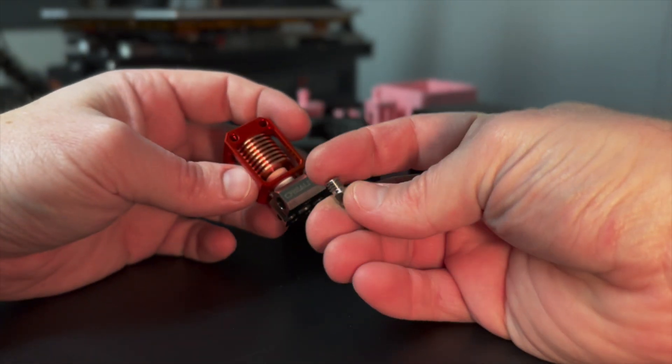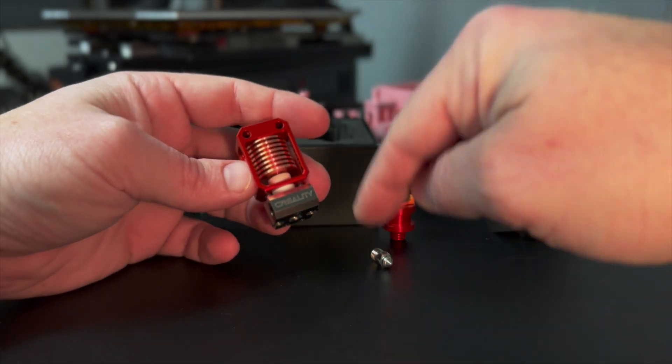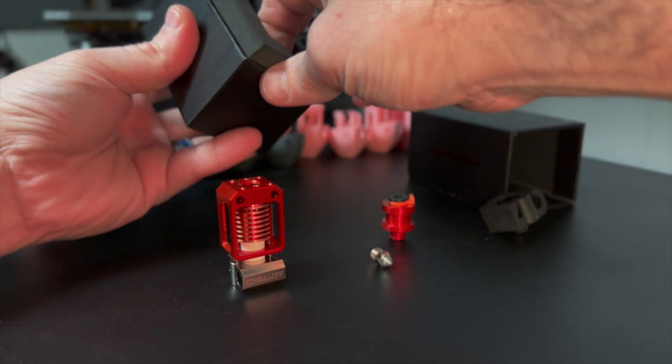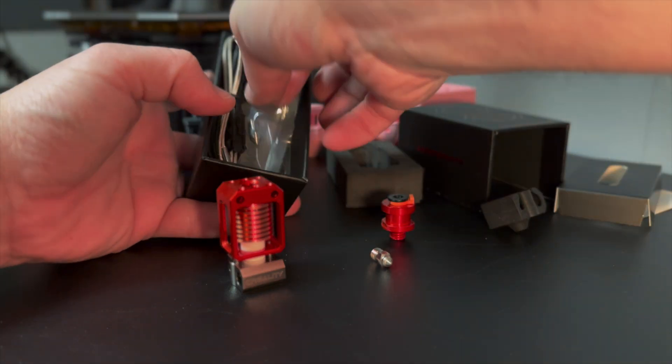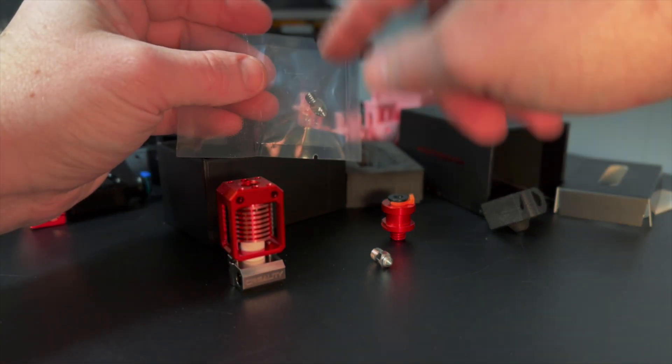In this case, this is a regular size nozzle and this one is a 0.4 millimeter nozzle. The reason why I mentioned that is because I noticed that when further unboxing, we see that there's an extra nozzle in here and it is a 0.8 millimeter nozzle, which is really nice.